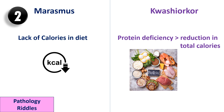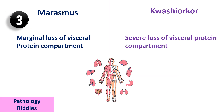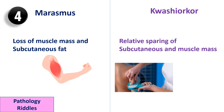Marasmus is due to lack of calories in the diet, whereas kwashiorkor is due to protein deficiency and less due to reduction in total calories. Marasmus shows marginal loss of visceral protein compartment, whereas kwashiorkor shows severe loss of visceral protein compartment.